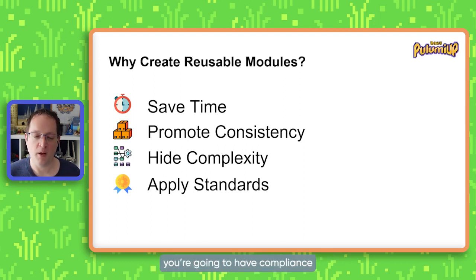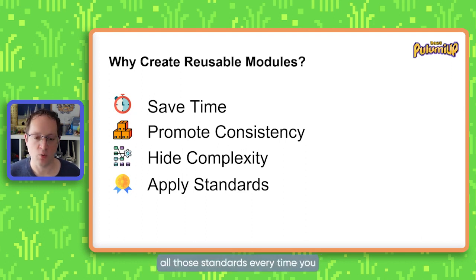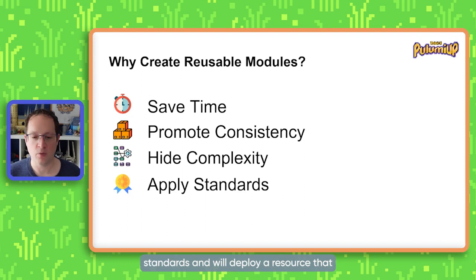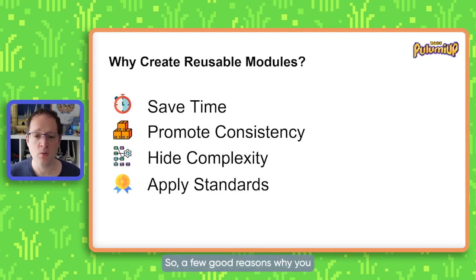This leads on to the fourth point — applying standards. If you work at any size company, you are going to have security standards, compliance standards, and corporate standards around what type of resources you're allowed to deploy and what sizes. If you're having to go away and read all those standards every time you create some infrastructure as code and make sure you're compliant, that takes time and it's very difficult to do consistently. So if you create a module that is consistent with your standards and will deploy a resource that is compliant out of the box, people can just consume that and know they're going to be compliant with security.